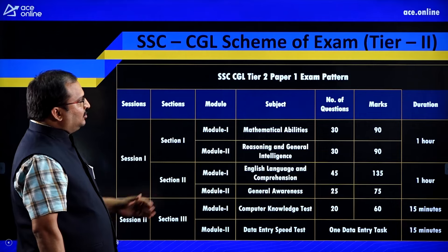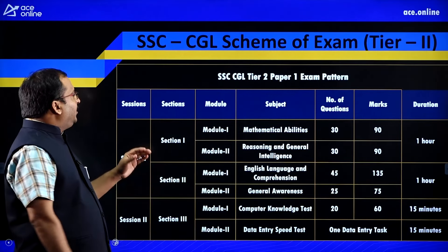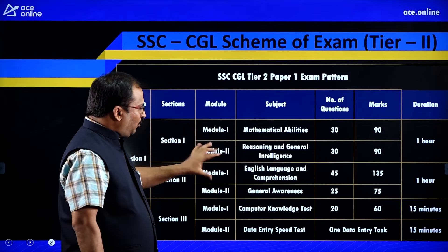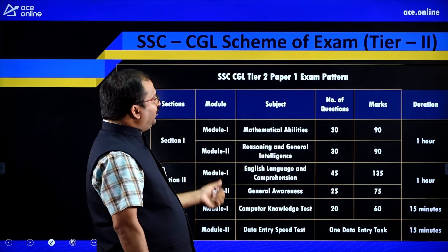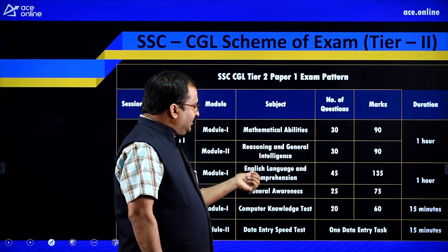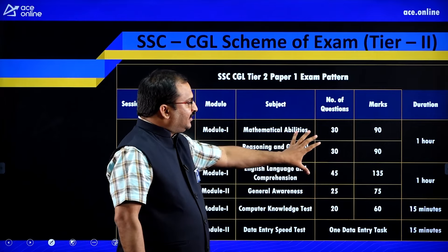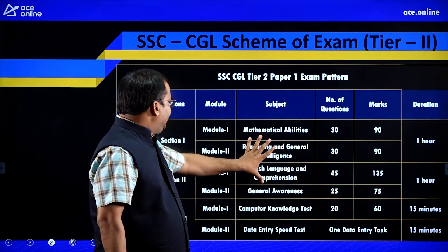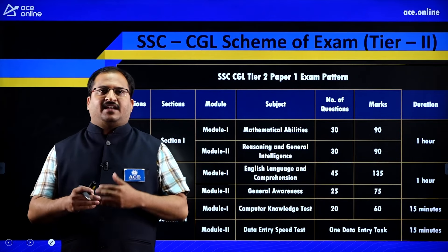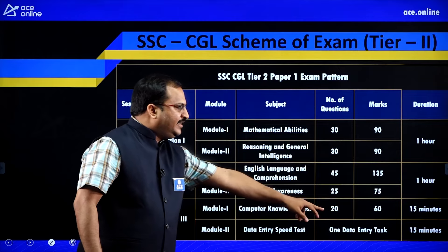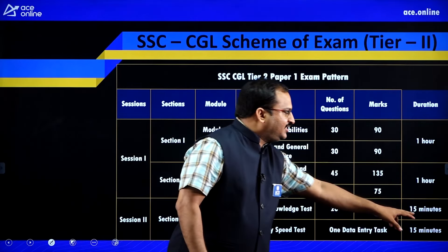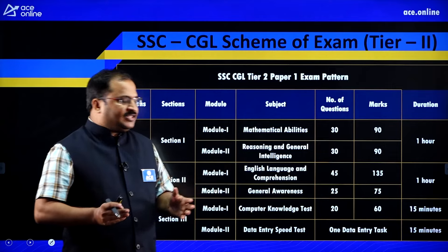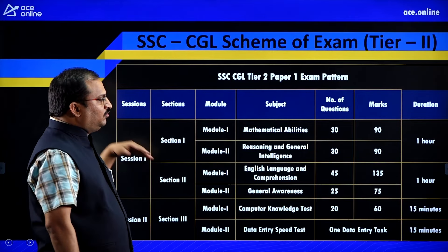Tier 2 contains Paper 1 and Paper 2. In Paper 1 there are 2 sessions. Session 1 has Section 1 and Section 2 with four modules total. Module 1 contains Mathematical Abilities, Module 2 has Reasoning and General Intelligence, then English Language and Comprehension, and General Awareness. Each question carries 3 marks, and Session 1 has a time duration of 2 hours. Session 2 contains Computer Knowledge Test — 20 questions in 15 minutes — followed by a Data Entry Speed Test with a 15-minute duration.